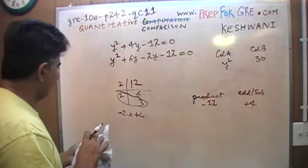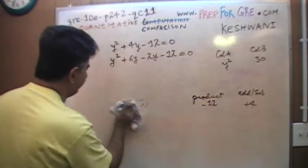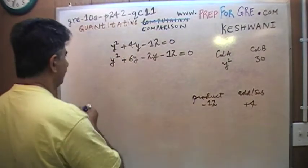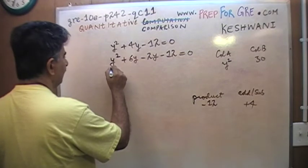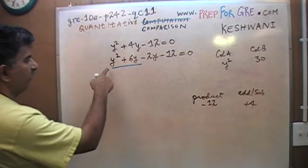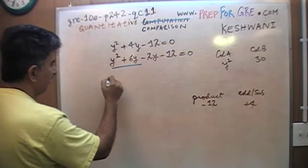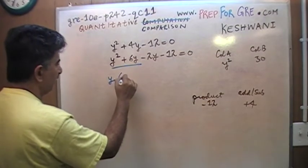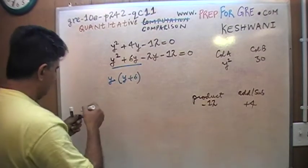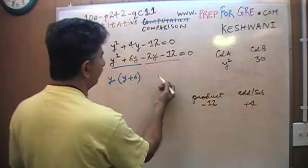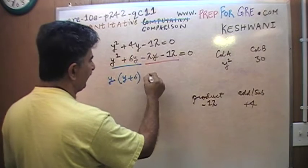Let's see what we can do here. Now, I want you to look at this part. What do you find common in this term and this term? What I find common in these two terms is y. If you take out the y common you get y plus 6. And now I want you to look at these two terms. What do you find common here? I find negative 2.